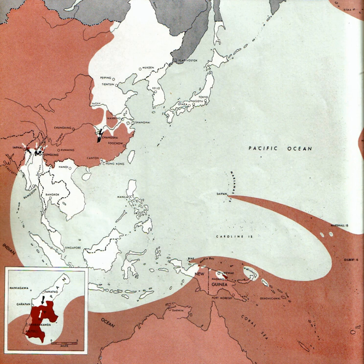The Brazzaville Conference begins in French Equatorial Africa. During the conference, the French Committee of National Liberation agrees to major reforms to the French colonial empire. On the 31st, American forces land on Kwajalein Atoll and other islands in the Japanese-held Marshall Islands.